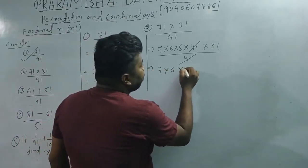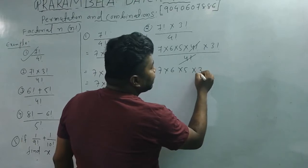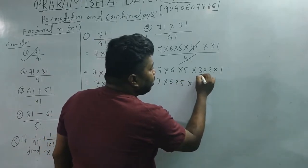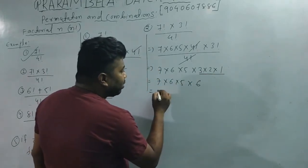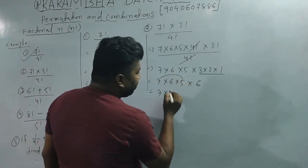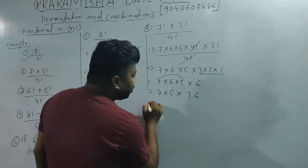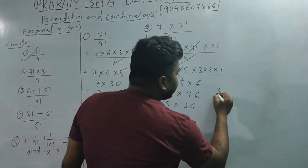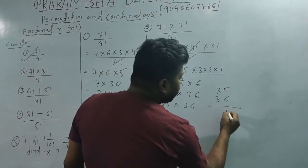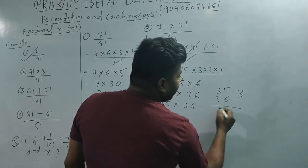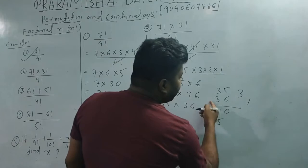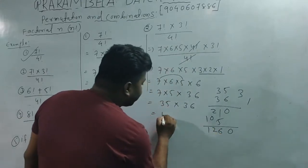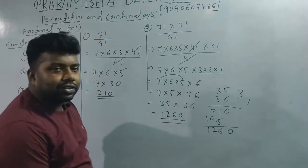We are left with 7 × 6 × 5 × 3 factorial. And 3 factorial means 3 × 2 × 1. So we compute: 7 × 6 × 5 × 3 × 2 × 1 = 1260. That is the answer to the second question.